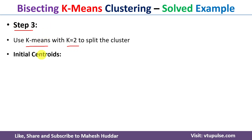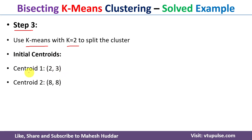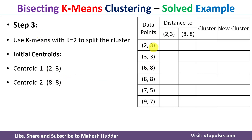To apply the k-means clustering algorithm we need initial centroids. Randomly I will select two data points as the initial centroids: centroid one is (2, 3) and centroid two is (8, 8). You can select any data points as the centroids. Now we need to calculate the distance from the given data points to these centroids.